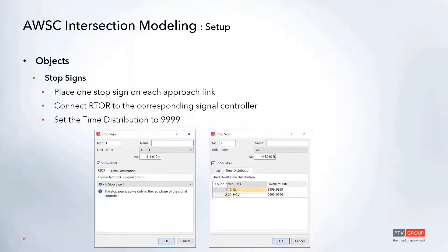On the stop sign side, we just have to hook up both the signal controller and signal group that we just defined, and then also set up that dwell time distribution for each of our vehicle classes.